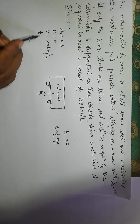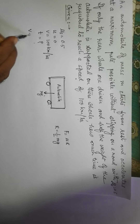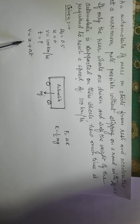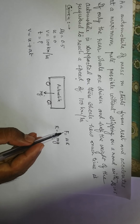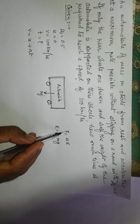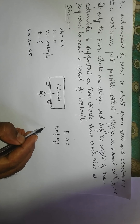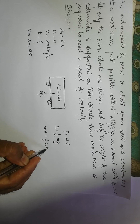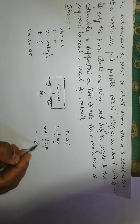We will use the kinematics equation v equals u plus at, where a is the acceleration, t is the time, u is the initial velocity, and v is the final velocity. The friction force F can be taken as m into a. So m times a equals one-half m times g, giving us a equals g by 2.